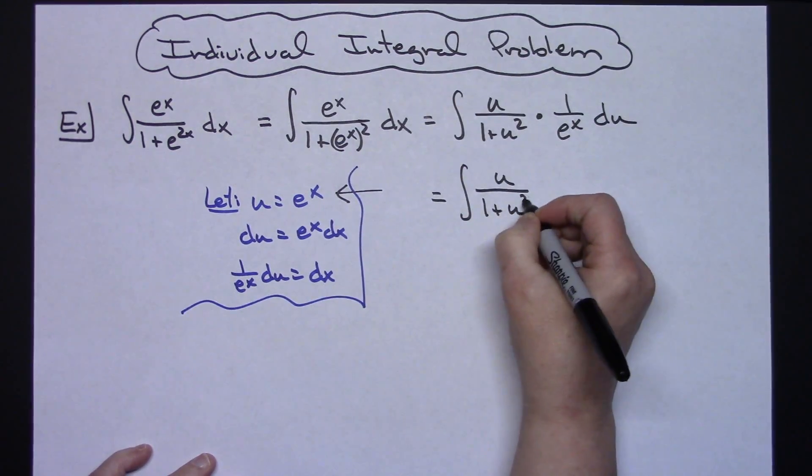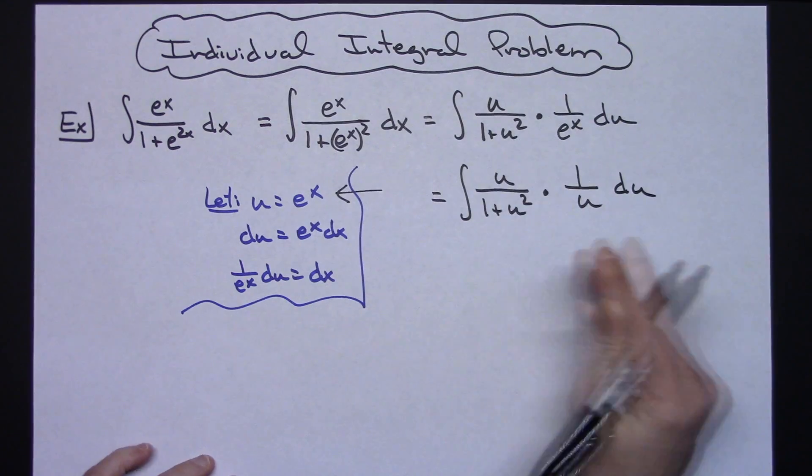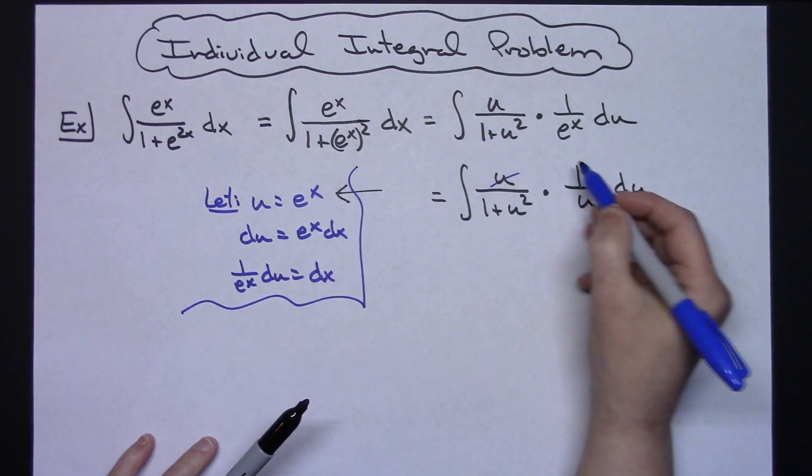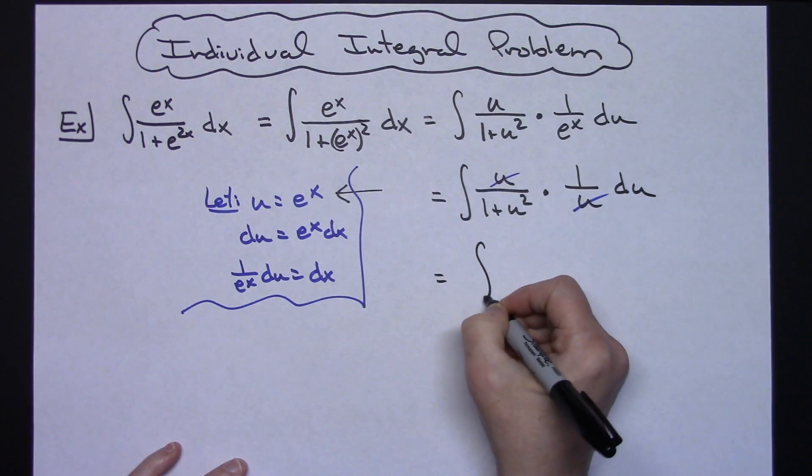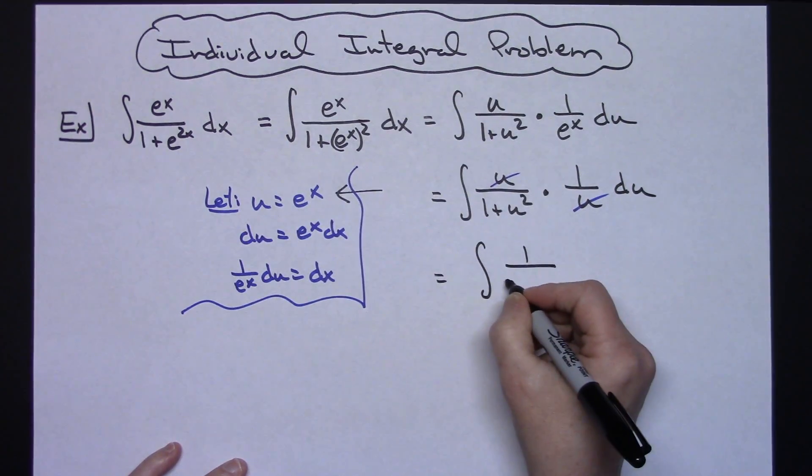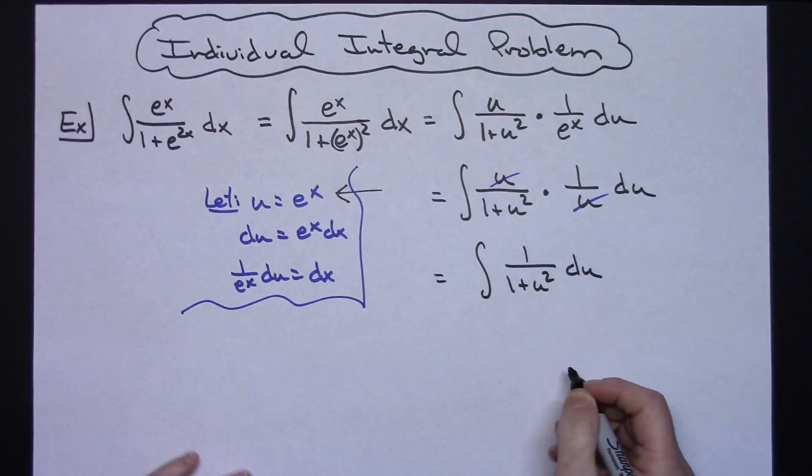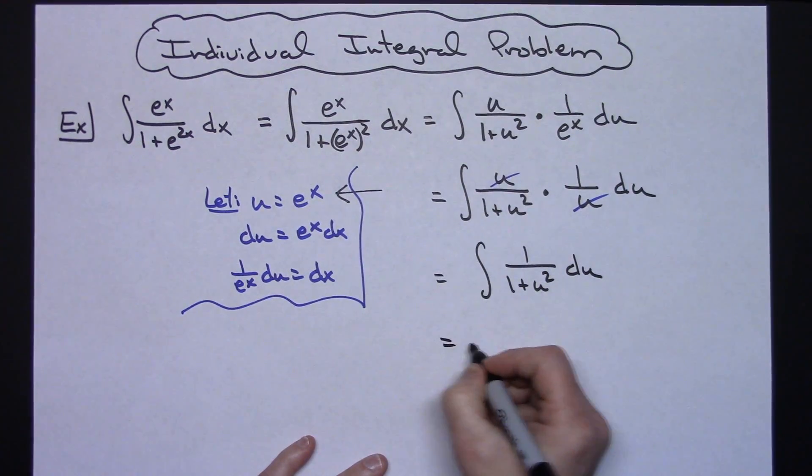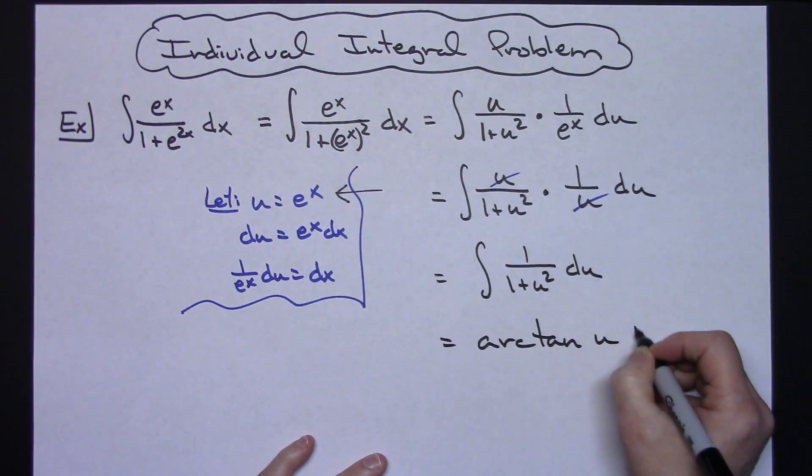U over 1 plus u squared times 1 over u du. Now all my x's are gone and my two u's there are going to cancel out, so then it's going to be a pretty simple integral of 1 over 1 plus u squared du, and that being the arctangent, inverse of tangent, so arctan u plus C.